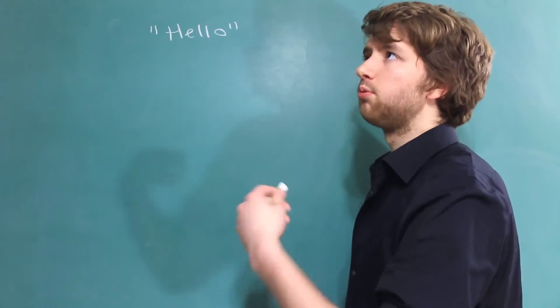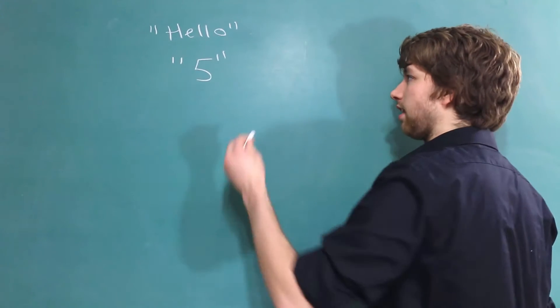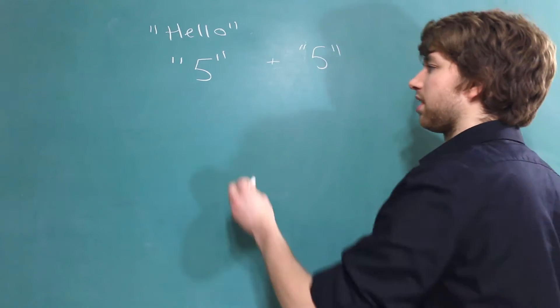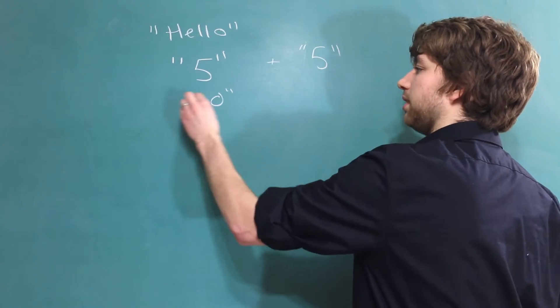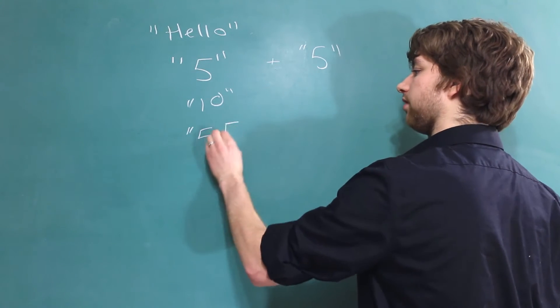And no longer do we have data types like integers and double and all that good stuff. In this situation we would have to represent a number like this. Now what if we said hey let's add 5 plus 5. Should this be interpreted as oh obviously that's going to be 10, or should it be interpreted as 5 5?